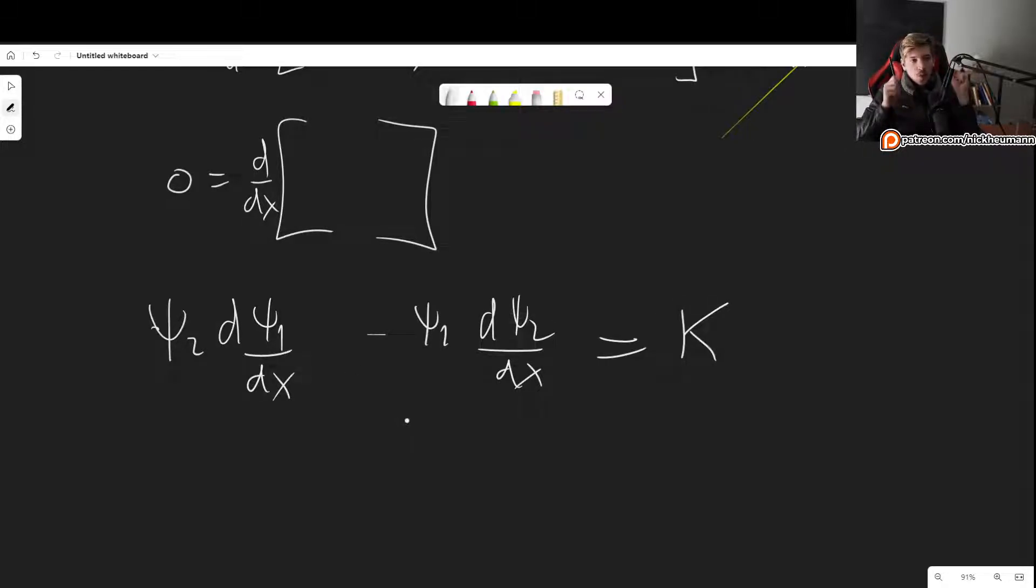But let's keep in mind, what is the condition so that our wave function can be normalizable? For it to be normalizable, we need that as x goes to infinity, we need that ψ₁ and ψ₂, both of them have to be normalizable. They have to go to 0. And this here has to hold for every single x. So if we go to infinity, if x goes to infinity, this still has to hold. But at that point, the left-hand side will become 0. So our constant has to be 0 as well.